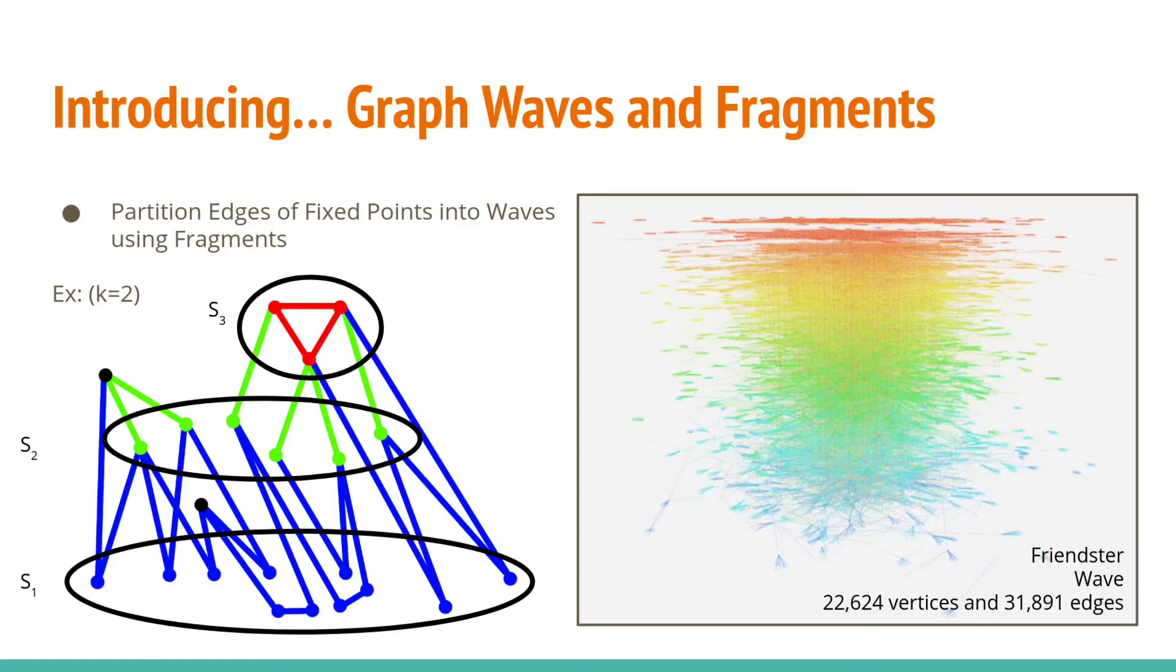All the edges removed so far are labeled as the first wave. We start again with a seed set of degree equal to K, and repeat the process until the fixed point is empty. In the left example, the blue and green edge fragments make up the first wave of a fixed point of minimum degree 2, and the red edge fragment makes up the second wave.